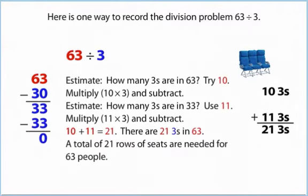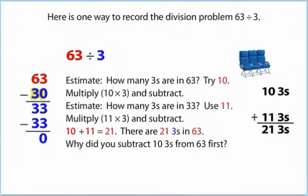A total of 21 rows of seats are needed for 63 people. Why did you subtract 10 threes from 63 first?